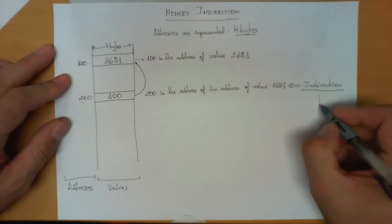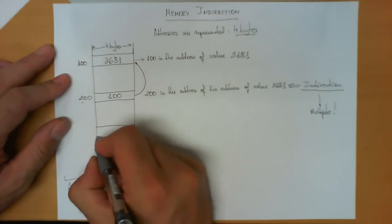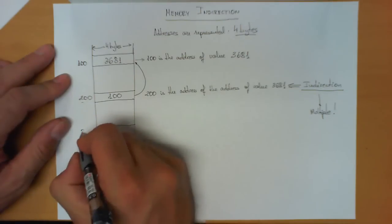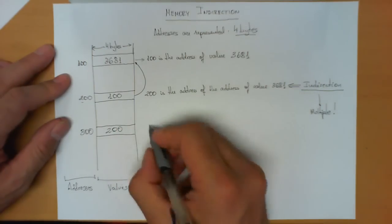Now, this indirection can actually be done multiple times, and this is where it gets a little bit confusing. So the same rationale can be applied again to the number 200. So for example, in position 300, we can store the value 200.